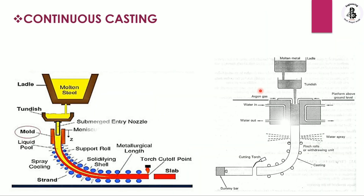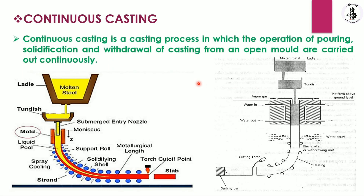You can see the basic setup for continuous casting. Continuous casting is a casting process in which the operations of pouring, solidification, and withdrawal of the castings from an open mold are carried out continuously. Initially, molten metal is collected into the ladle.